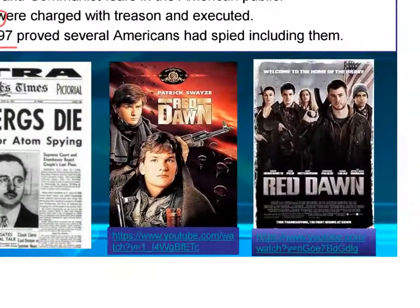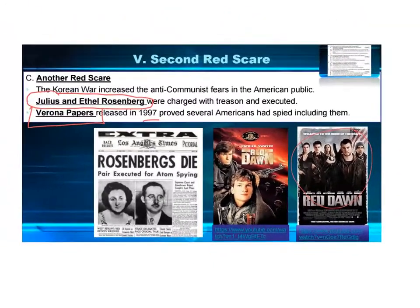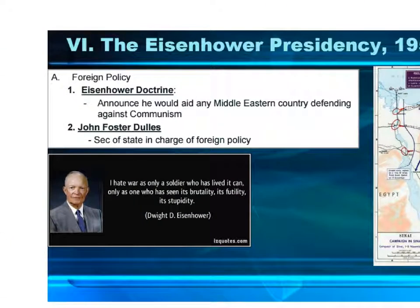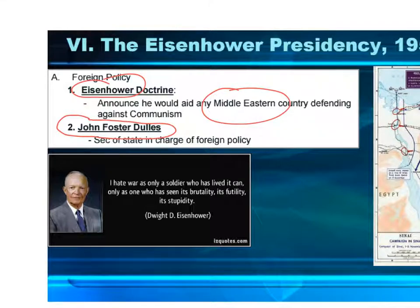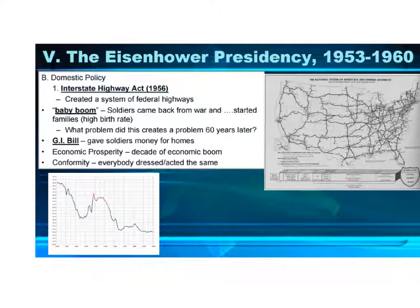A couple of cool movies on this topic: Red Dawn from the 80s is about Soviets invading America with kids protecting their neighborhood instead of adults. The remake applied the same concept to North Korea or China invading the United States. These next few things are short and quick: the Eisenhower Doctrine, just like the Truman Doctrine, says we'll provide military or any type of aid to any country fighting communism — only the Eisenhower Doctrine is for the Middle East, whereas the Truman Doctrine was for Europe.